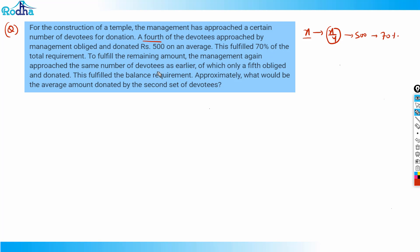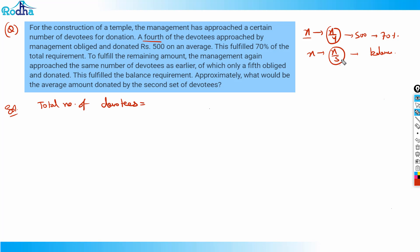In the second round, they again approached the same number of devotees, of which only a fifth obliged and donated. To make things easier, since we have a fifth and a fourth, we'll take the LCM of 5 and 4, which is 20. So we'll assume the total number of devotees approached is 20x, and let the total amount to be collected be n.